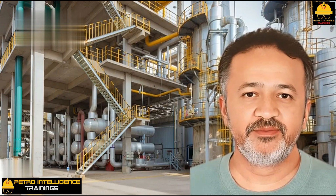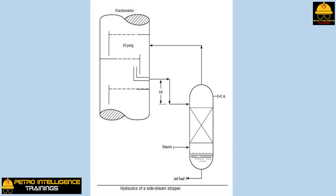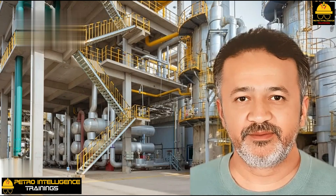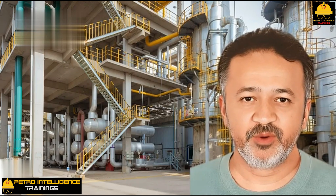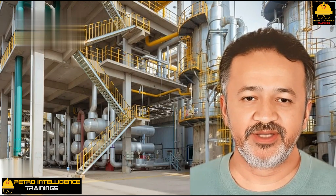The liquid head driving force of 16 feet, or 4 psi, is actually not all available to overcome the higher stripper pressure. The frictional loss of the piping used to feed the stripper should be subtracted from the liquid head driving force. In the jet fuel example, this frictional loss was neglected. Sometimes the cheapest way to correct a hydraulic problem on a sidestream stripper is to pump the product into the stripper, but raising the pressure in the stripper will reduce stripping efficiency. That's all. If you like my video, please follow my YouTube channel Petro Intelligence for more videos. Good day and good luck.